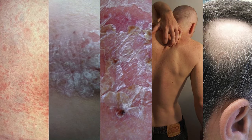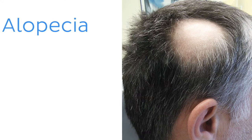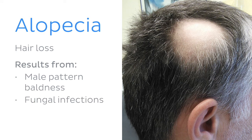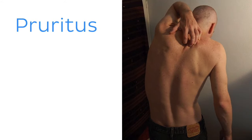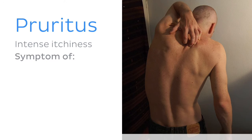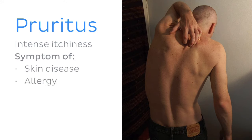Let's look at some of the most common dermatological disorders. Alopecia is the clinical term for hair loss, which can occur due to male pattern baldness, fungal infections, or drug treatments and illness. Another common condition is pruritus — the clinical term for intense itchiness — which usually occurs as a symptom of another disorder such as skin disease, allergy, infection, liver disease, or renal dysfunction.